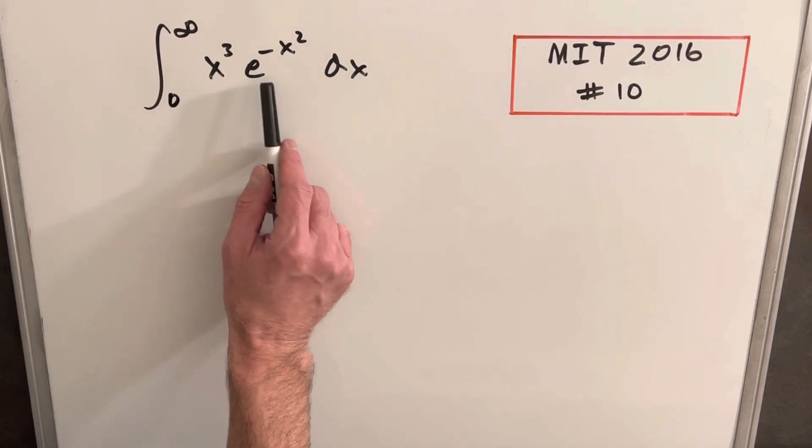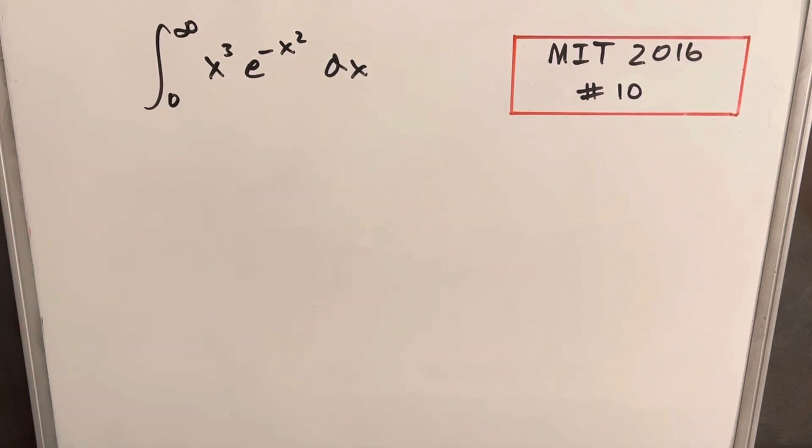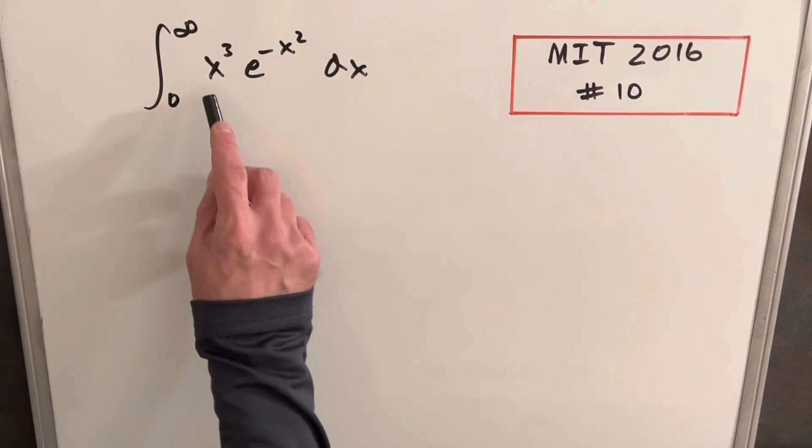The very first thing I thought of was with this e to the minus x squared, that looks like the Gaussian integral. And then I messed with it a little bit and I found I don't really have a good way to incorporate that, just because we have this x cubed and we need to deal with this first.